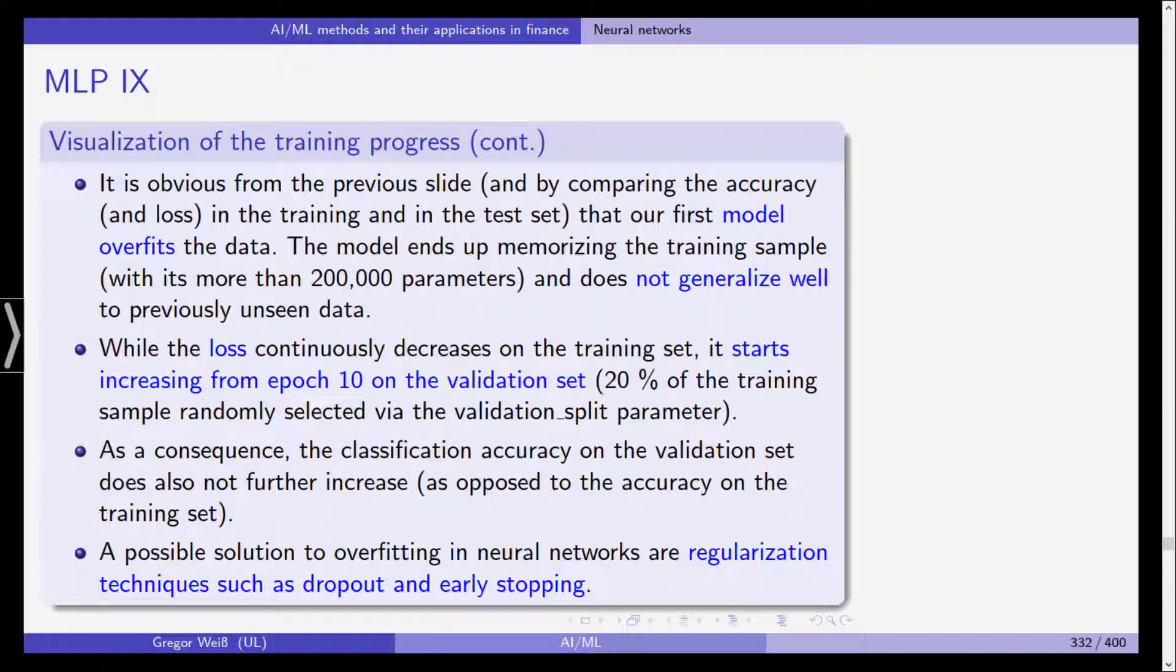We could simply store all our observations in one or more parameters and thus it does not generalize well to previously unseen data. While the loss continuously decreases on the training set, it starts increasing from epoch 10 on the validation set. That's approximately 20% of the training sample that we randomly selected via the validation split parameter.